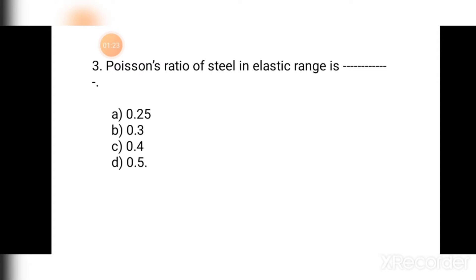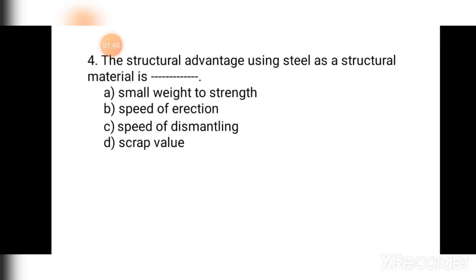Question number three: Poisson's ratio for steel in the elastic range is — (a) 0.25, (b) 0.3, (c) 0.4, (d) 0.5. In the elastic range, the value of Poisson's ratio is less than that in the plastic range. The correct answer is (b) 0.3.